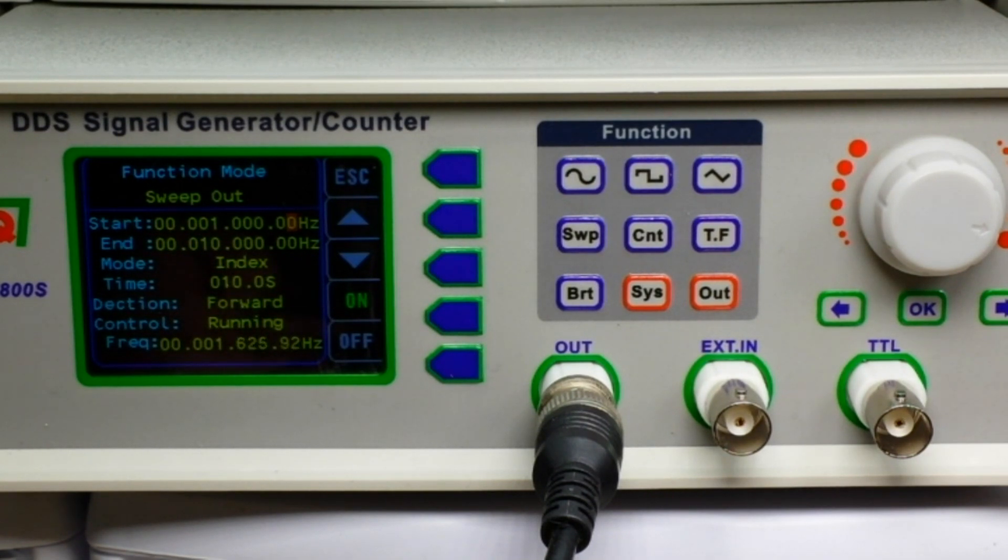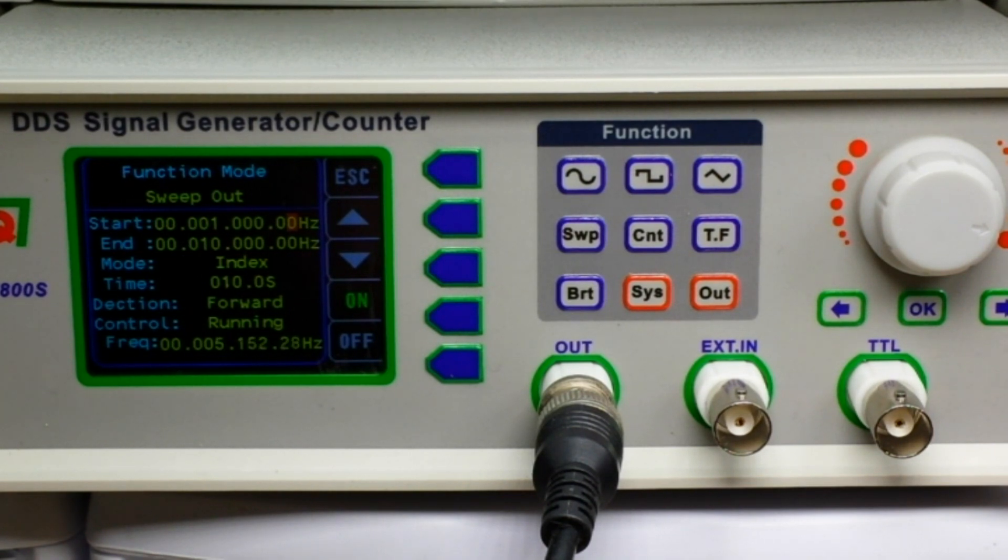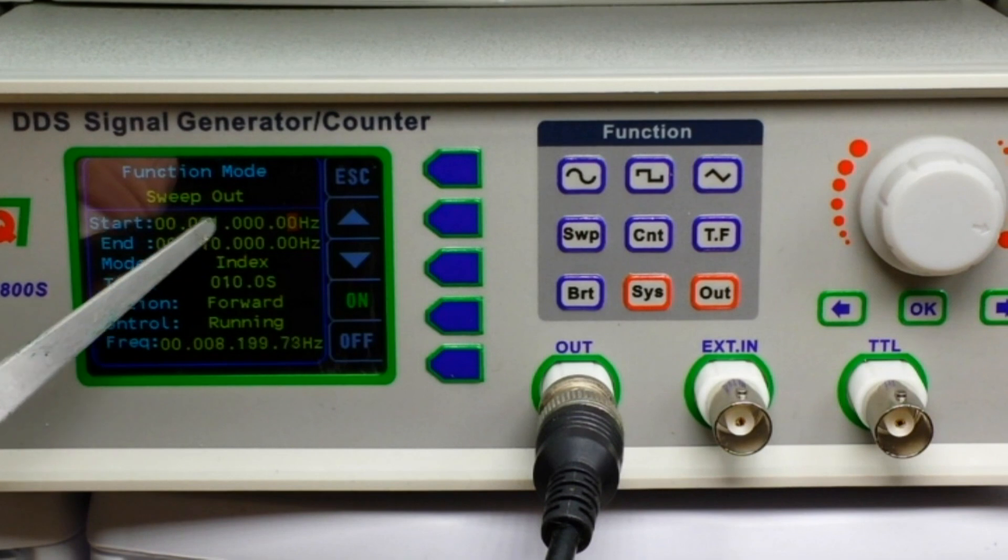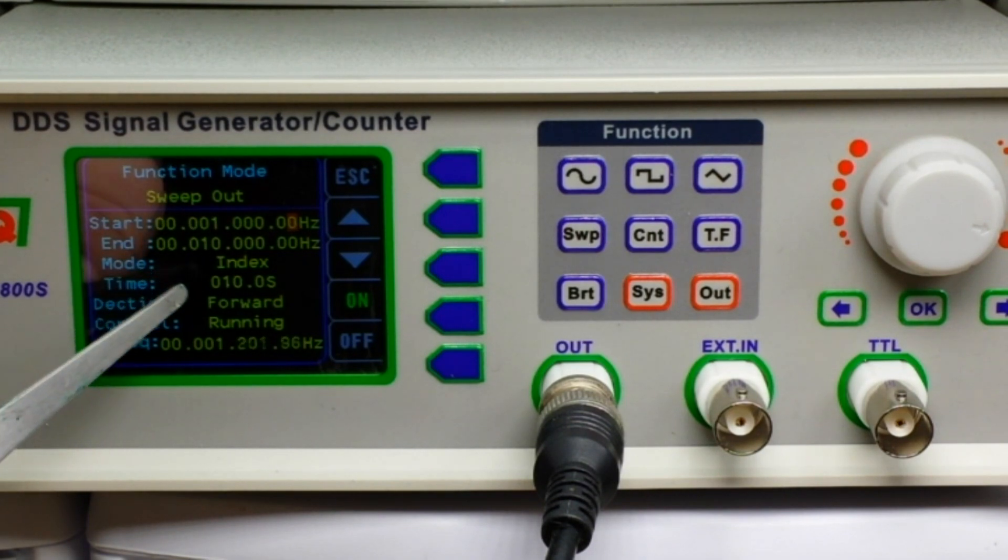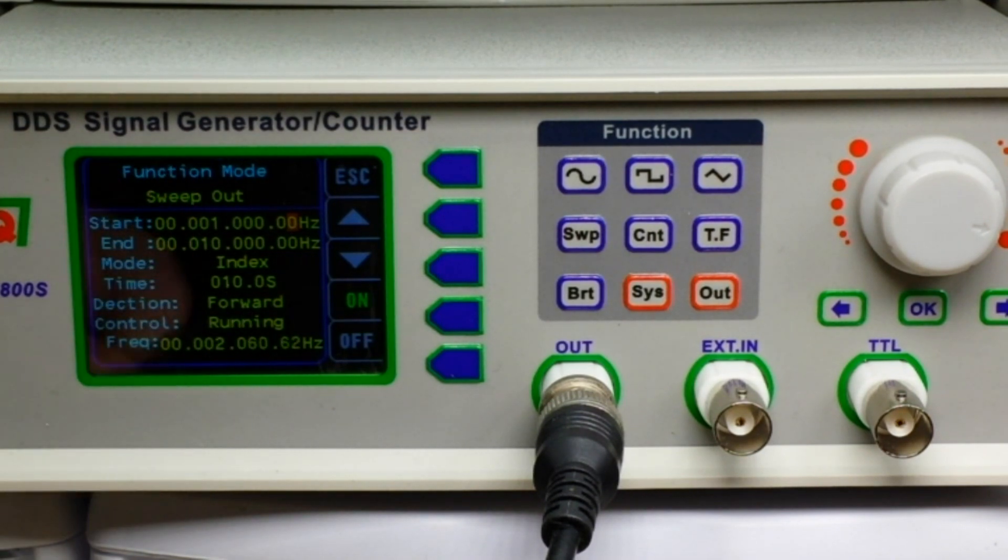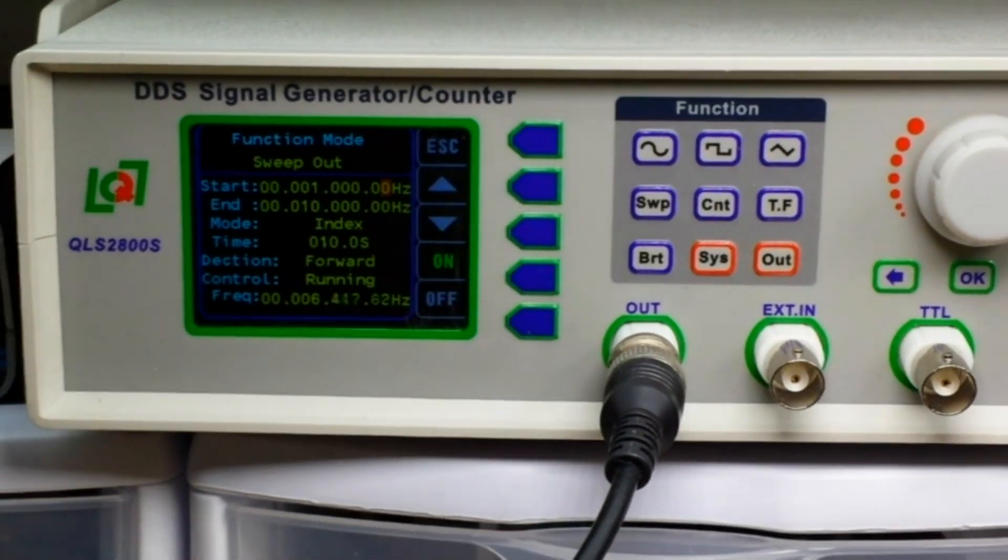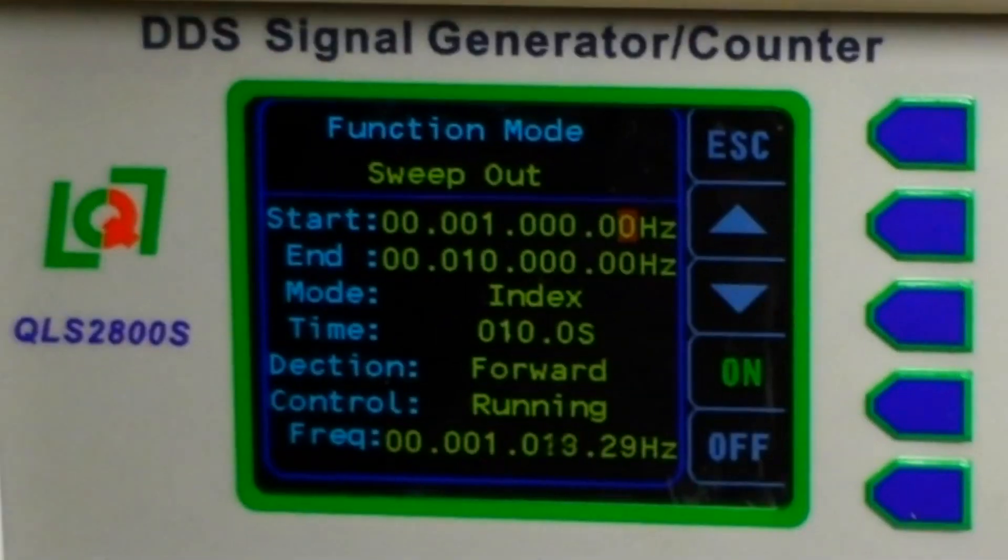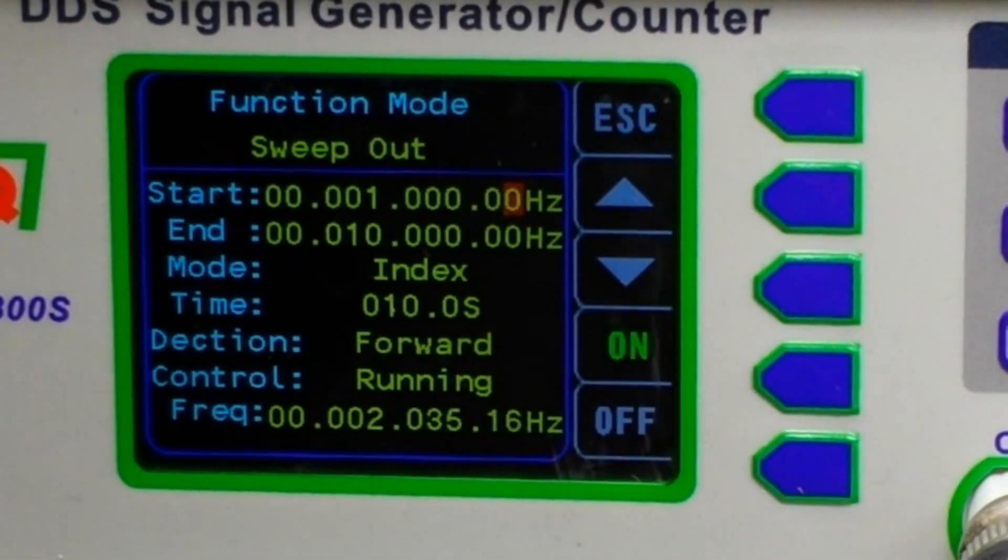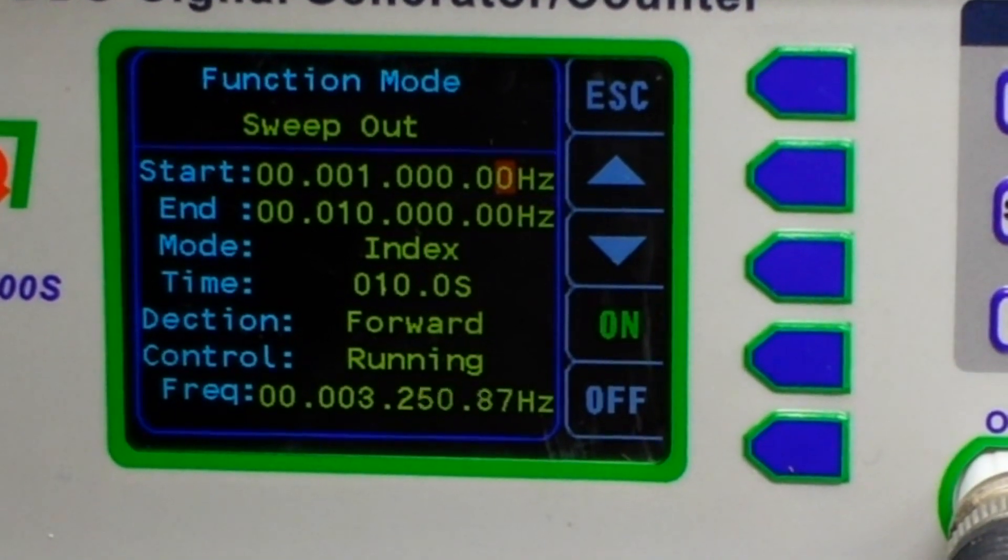So here is the QLS 2800 function generator we looked at a few days ago. One of the things you can use a function generator for is injecting a sweeping signal into a filter to test it out. You can see right here, function mode, we're running a sweep from one kilohertz to ten kilohertz over ten seconds and you can actually see the frequency is changing right there.